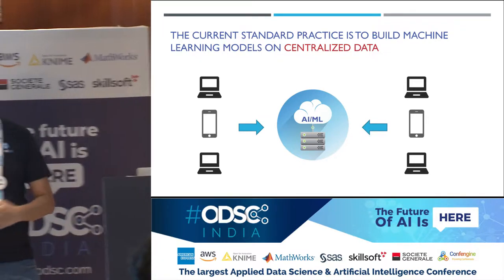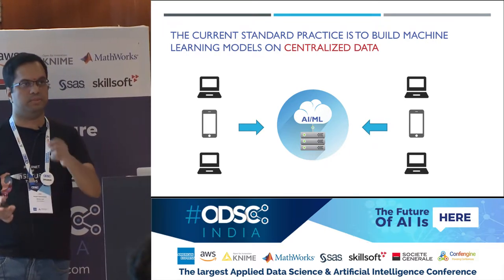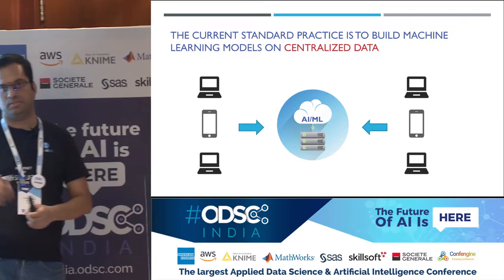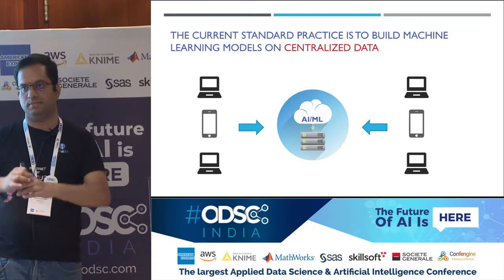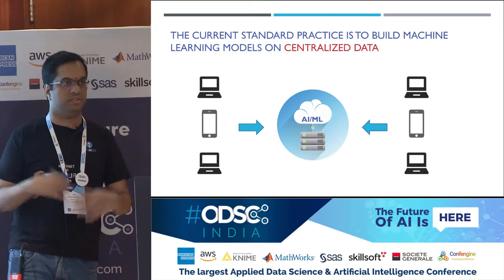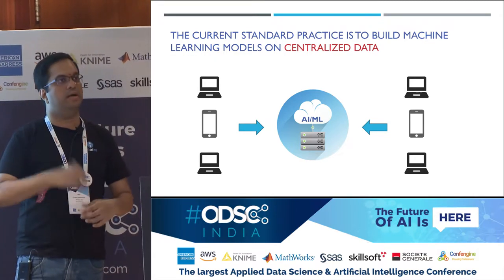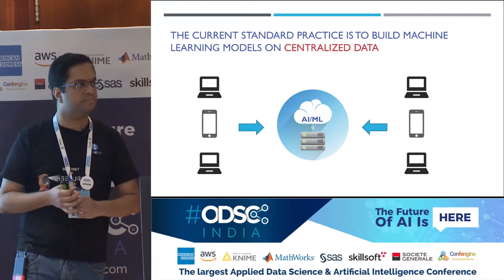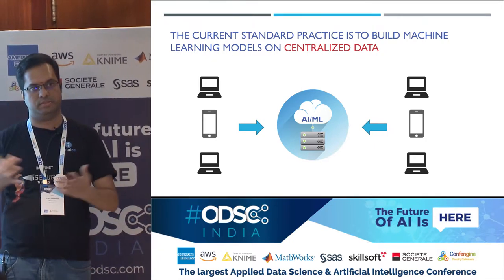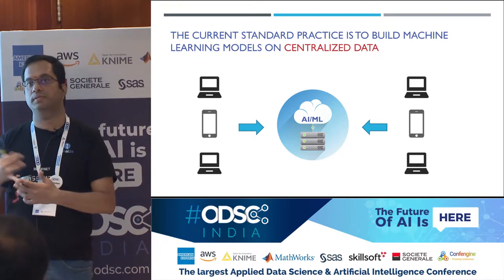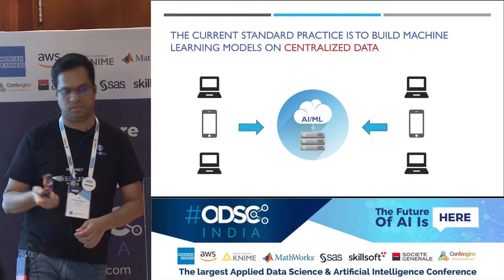An example of this could be fraud detection on a POS machine — a point of sale machine — where you want to do credit card fraud detection. Somebody swipes the card, all that data from multiple POS machines around the world goes into a centralized system as discrete events. Models are built and inferences happen there to tell if a particular transaction is fraudulent or not.